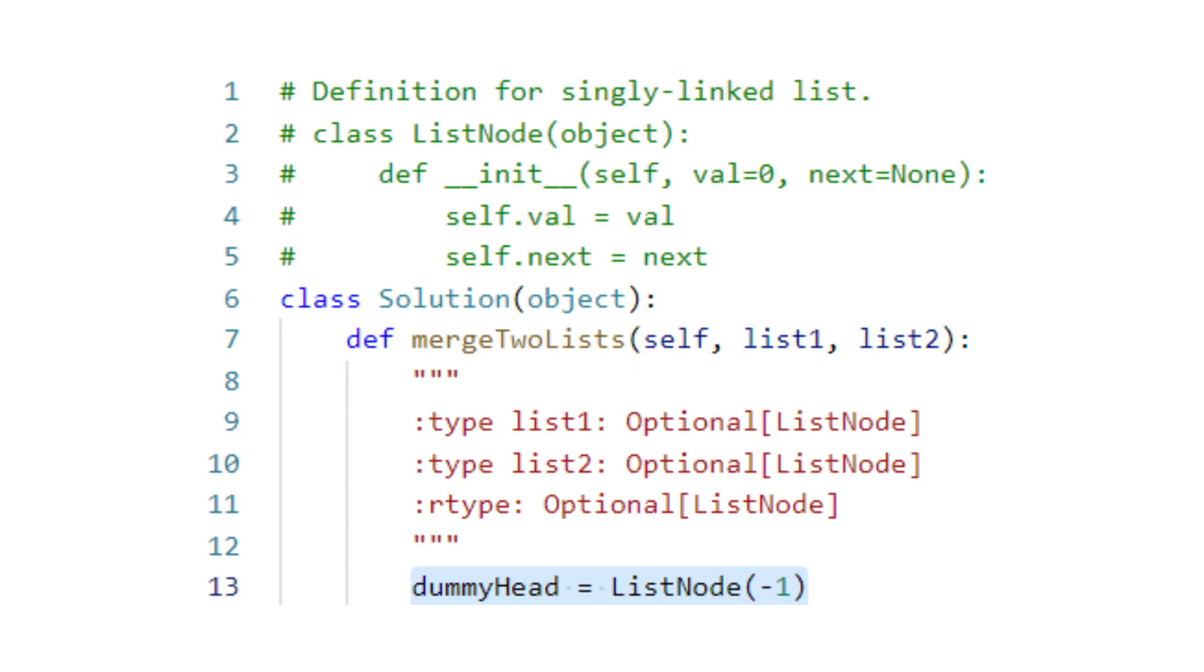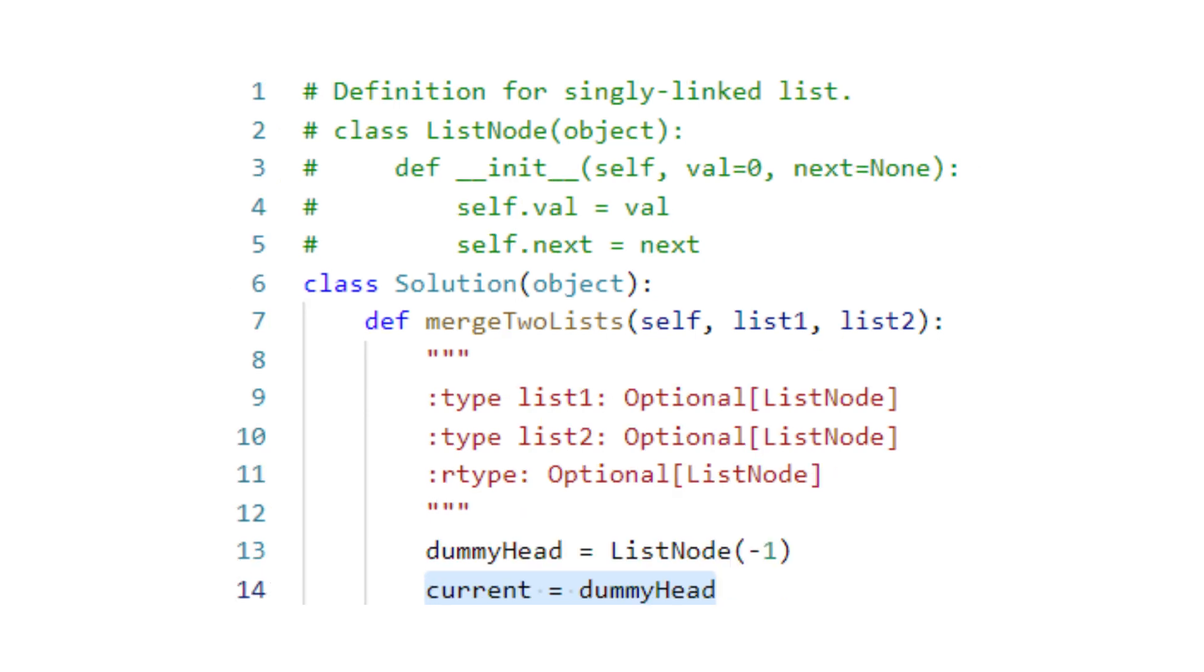To code this solution, we can start by creating a new linked node called dummy head that will point to the merge result. We'll let another variable current equal to dummy head, which is a pointer to the end of the new linked list where we want to add new nodes.